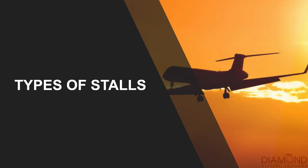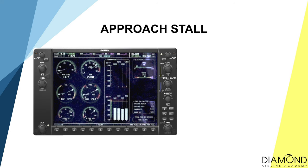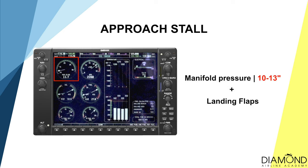After completing the HASEL check, we will look at the different types of stalls. There are two stalls we need to practise. The first is the clean idle stall — a stall at idle power without any flaps. The second is the approach stall, which simulates the aircraft in approach configuration with landing flaps and a reduced power setting. After going through the theory, it's now time to put it into practice on our Diamond DA40.